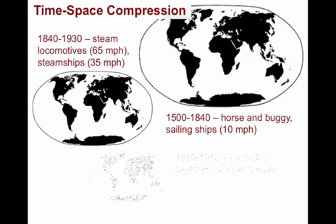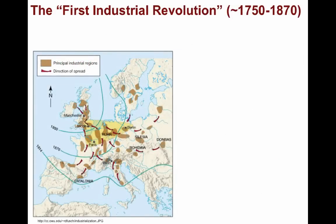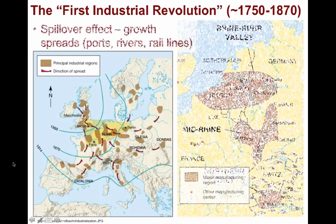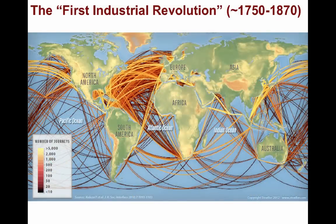The world feels as if it gets smaller as transport and communication technology improves. And certainly, the Industrial Revolution diffused first to relatively close places such as the Netherlands, Germany, France, Poland, Italy, and Russia, and across the Atlantic to the United States. Wherever industrialization took root, it had a spillover effect on other areas connected by way of transport nodes along ports, rivers, canals, and rail lines, such as to the Ruhr Valley found in Germany, the most industrially productive region in Europe today. No matter how you look at it, the Industrial Revolution changed the world forever.